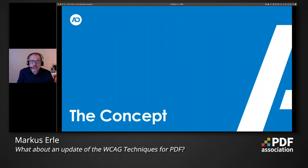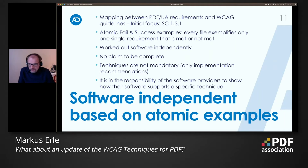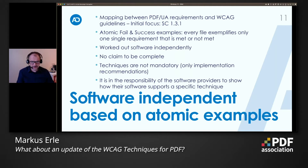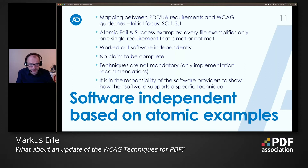Let me talk about the concept. In a first step we tried to map between PDF UA requirements and WCAG requirements and the guidelines. We decided that we want to initially focus on success criterion 1.3.1 — Info and Relationships — because it's a perfect fit to PDF UA. It is related to rich semantics and machine-readable semantics, so we thought it's a good idea to start with this success criterion.